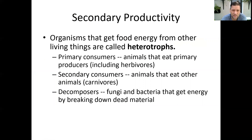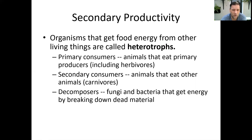Primary productivity refers to the autotrophs. Secondary productivity refers to heterotrophs — they are going to go and find food to eat. There are three different classes: your primary consumers, which you could consider herbivores eating the plants of the ocean; your secondary consumers, which are organisms that eat other animals — carnivores; and then all kinds of organisms such as fungi and bacteria that break down dead material and put nutrients back into the ecosystem.